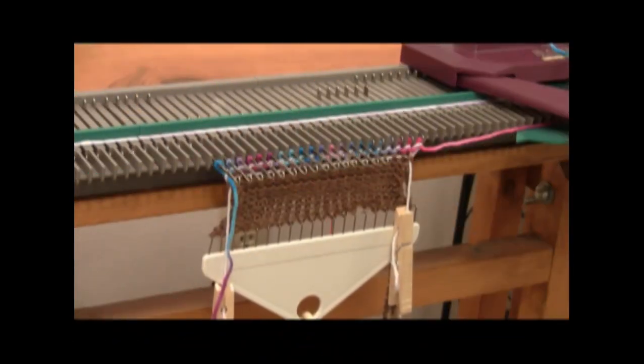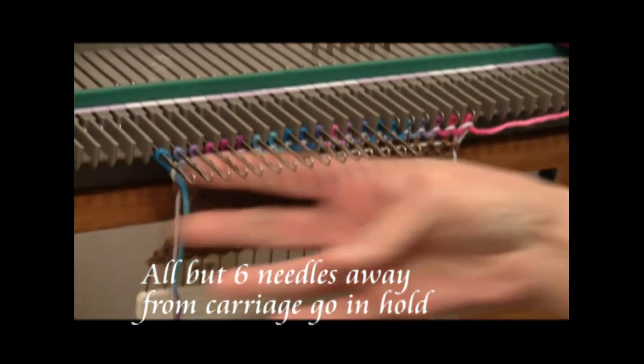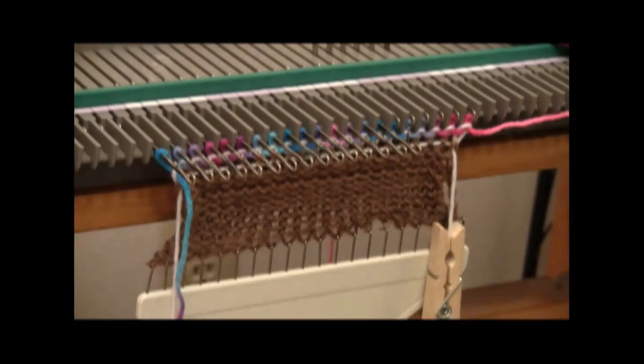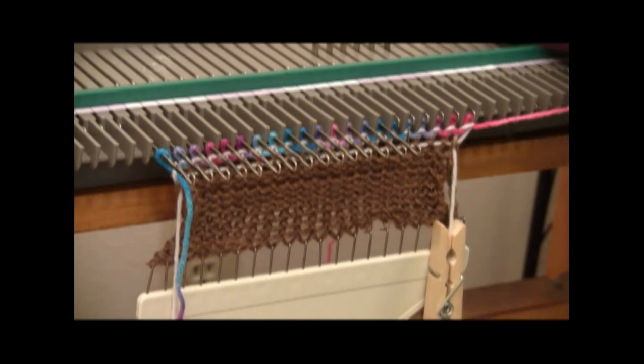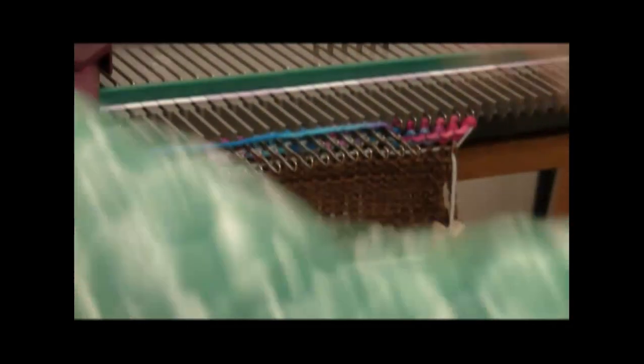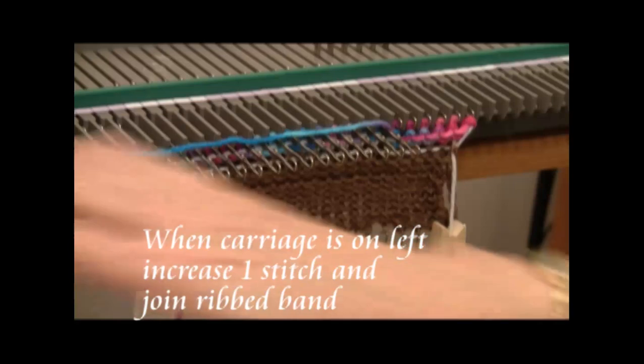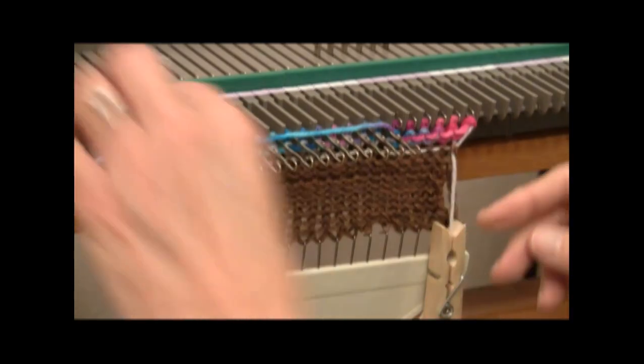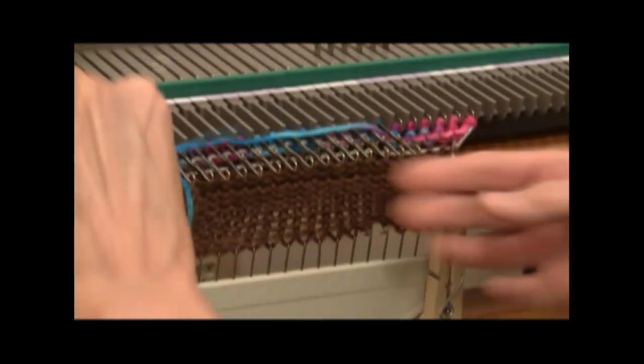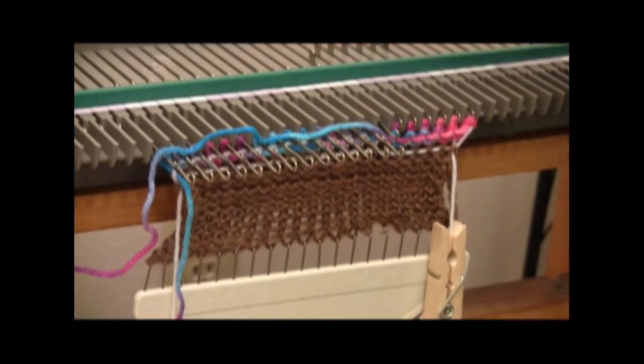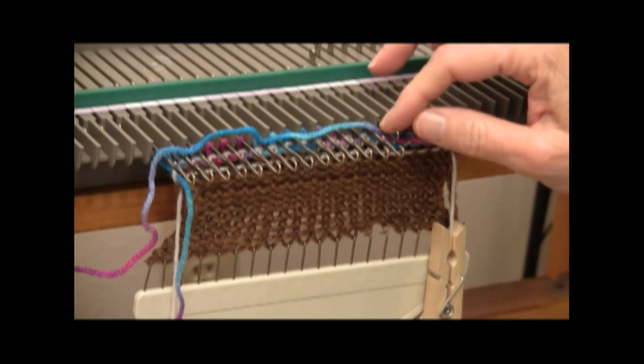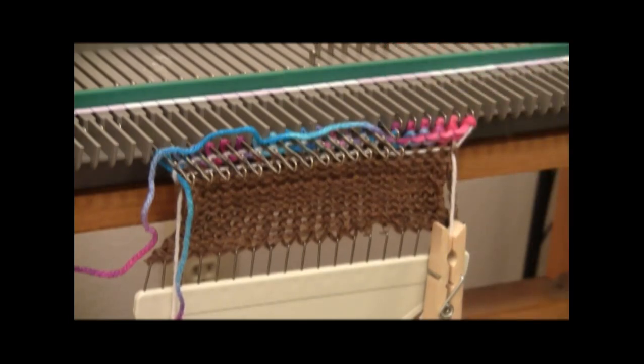The hat is short rowed. I have brought the needles away from the carriage except for the last six into hold position. Those needles are not going to knit, and I'm going to knit across over to those needles. And then each row, when I'm on the left side, I'm going to add another needle into work. It's called a short row increase. I take the yarn and put it under the needle I'm going to add, and I move the needle back about halfway. And always, always with the USM, check and make sure that the latch is open on the needle I'm adding.